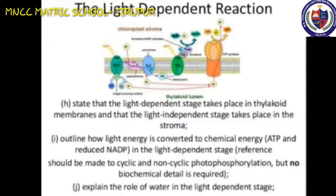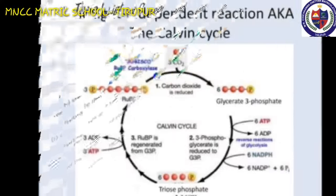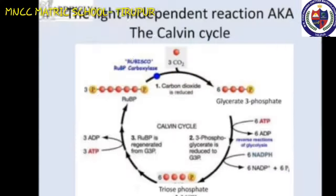The full form of ATP is adenosine triphosphate. The full form of NADPH2 is nicotinamide adenine dinucleotide phosphate. These products of the light reaction move out from the grana to the stroma of the chloroplast.